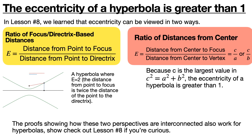Using the same proof as in lesson 8, we can show that eccentricity is c over a or c over b. And because c is the largest value among a, b, and c in a hyperbola, that's another way of showing that the eccentricity of a hyperbola is greater than 1.